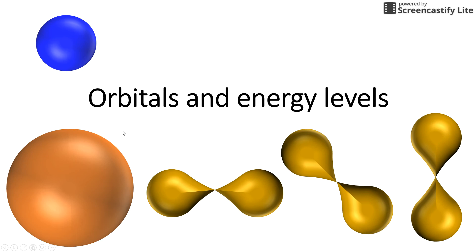Kia ora. What is the difference between an orbital and an energy level? An orbital is a region of space where you can find electrons. Each orbital can take up to two electrons because the electrons spin in different directions.